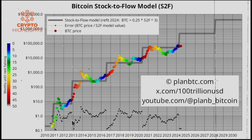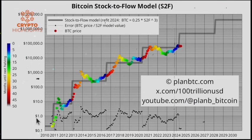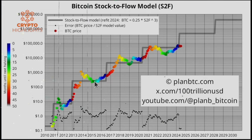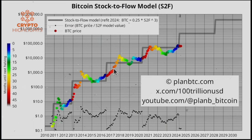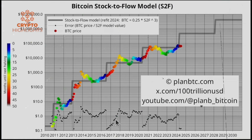The error — a lot of questions about that. I wanted to put all the information in one sheet without using too many axes. One means the model is exactly right — the same as the model price. For example, the bear market in 2015 was exactly on the gray model line, so the error there is one. When Bitcoin is above the model line, the error goes above one — two times, three times, four times above the model. If the Bitcoin price is below the model value, the error is below one. Then it grows back to the model line, and the error is one again.